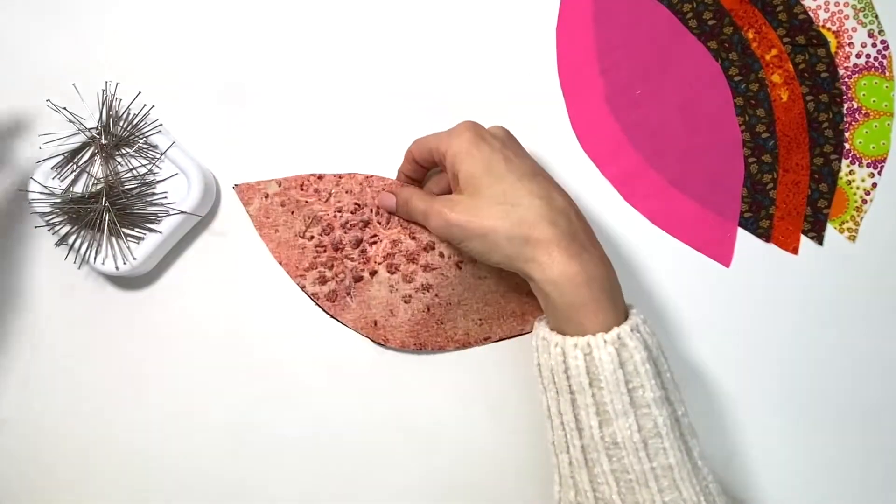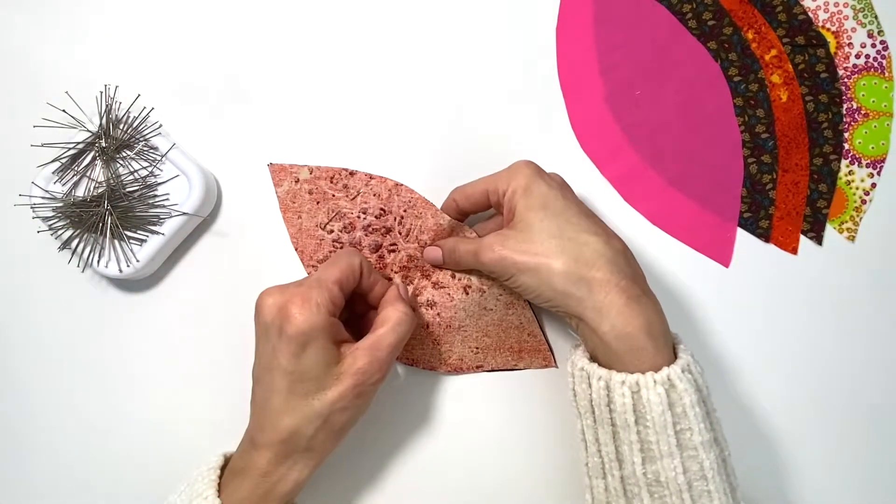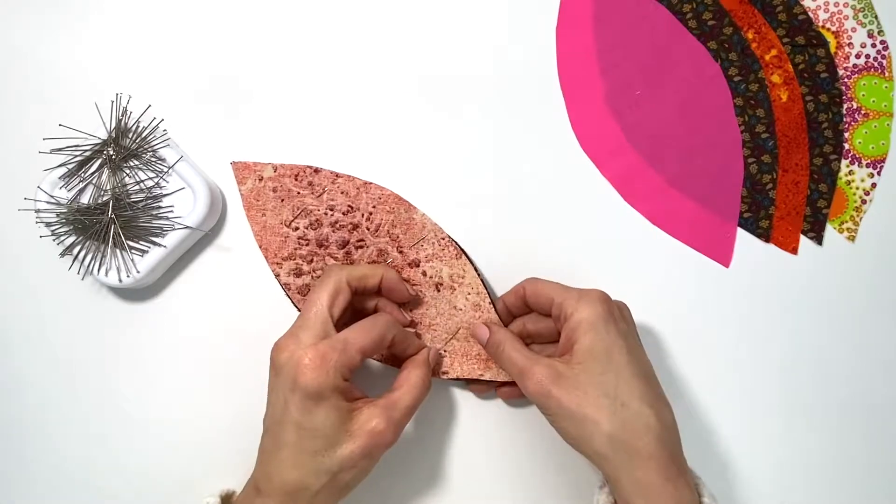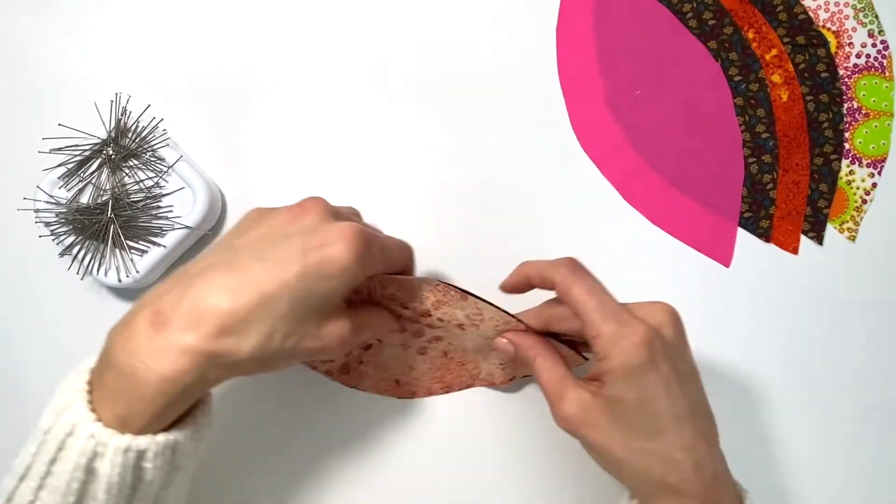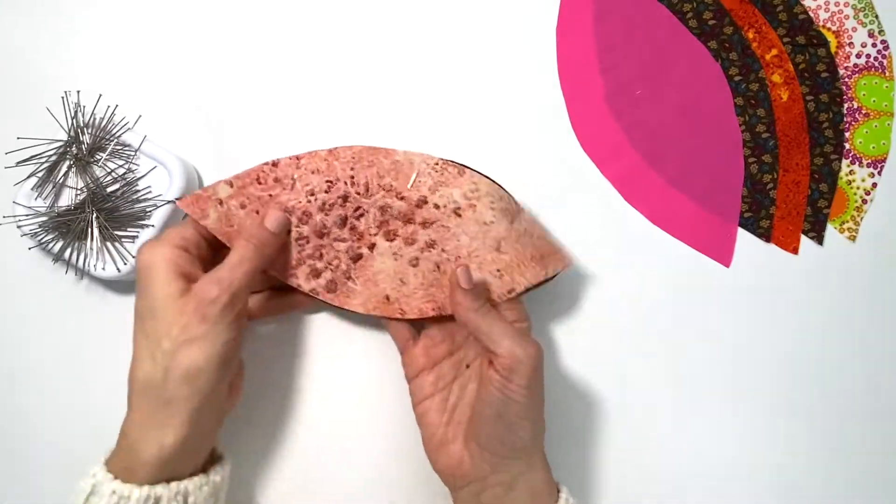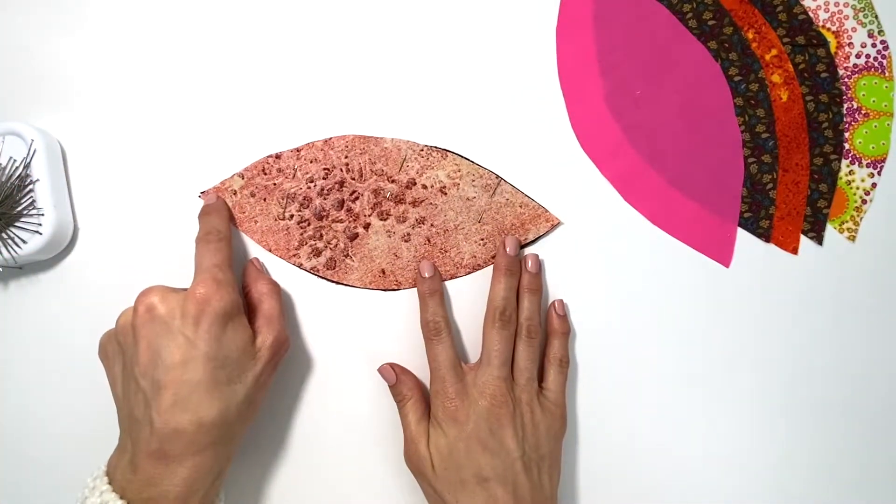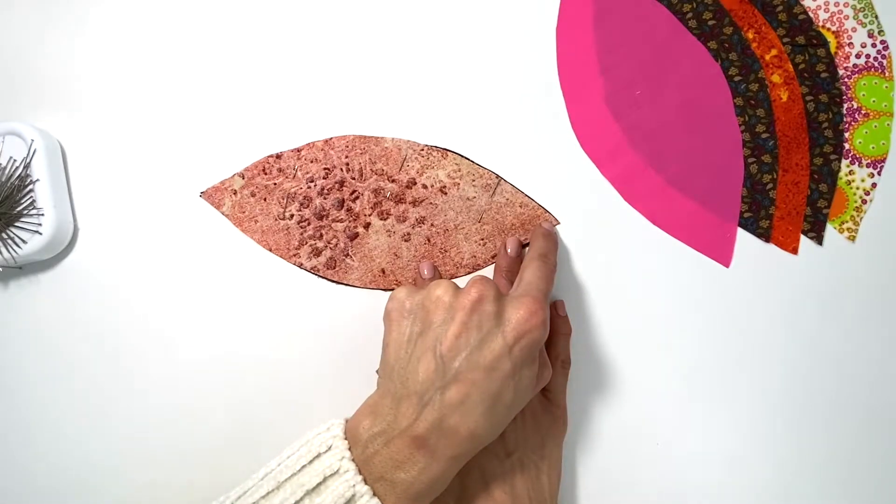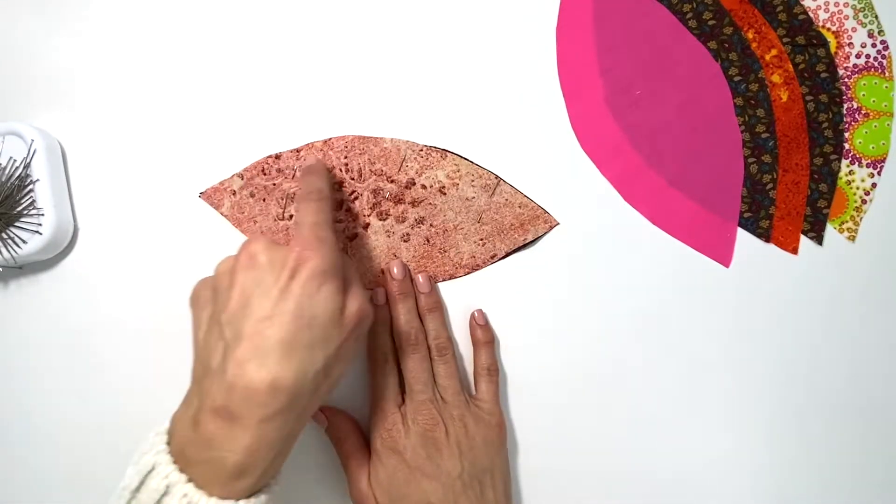You're going to sew just on one side, so you want to keep the pin head away from the side you're sewing on, just to be safe it doesn't get caught in your sewing machine. I'm going to keep a quarter of an inch seam allowance, meaning I am going to sew from one end all the way around to this end, just on one side.